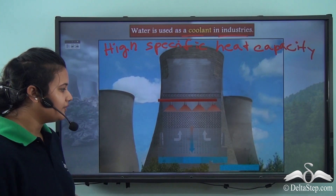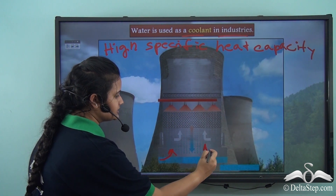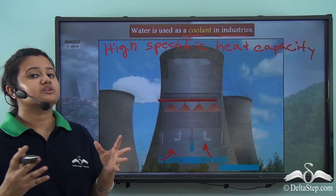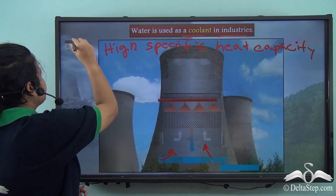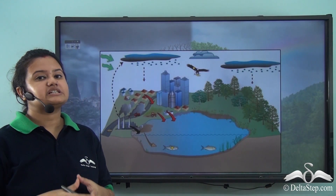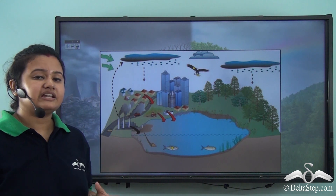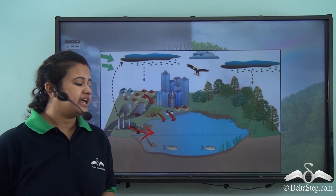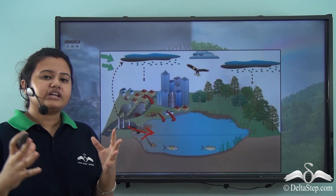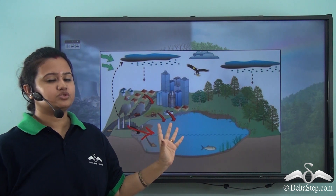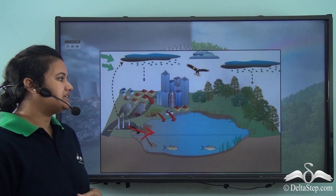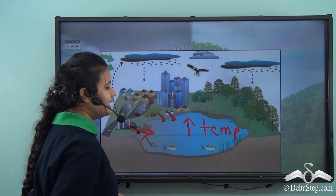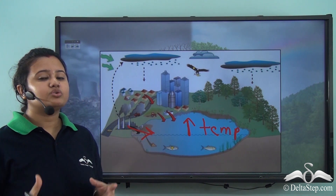In various chemical processes, industries use water as a coolant. But do you know what finally happens with the water used as a coolant in industries? That water is directly released into water bodies — in other words, the overheated water is directly discharged into water bodies.